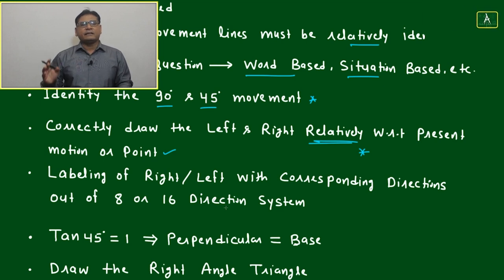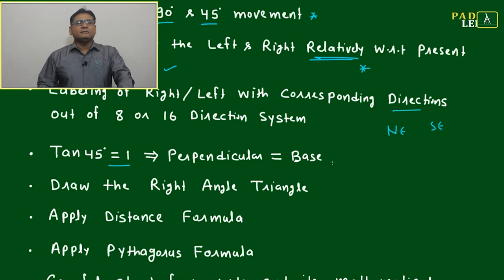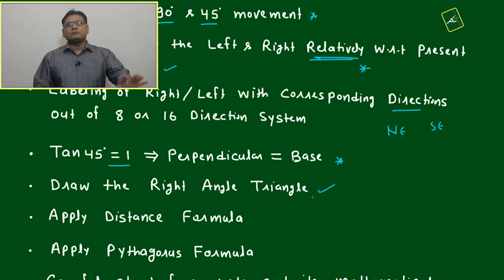Labeling of right and left with corresponding directions out of 8 or 16 direction system. If you are taking right or left and getting confusion, or a question is demanding, you must label with the direction like northeast, then southeast, and so on. Label the directions out of the 8 or 16 direction system. And 45-1 means perpendicular will always equal to base. Draw the right angle triangle. These are all the tools.